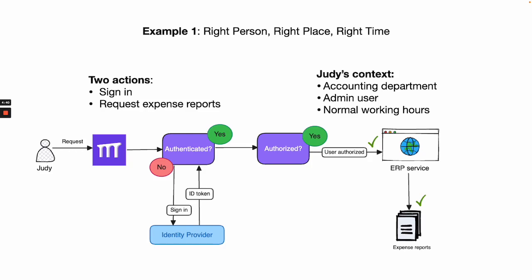Continuous verification first verifies Judy's identity and checks that she has permission to access the ERP software. Then it makes sure she has the right context to access the reports. Each action is continuously verified.